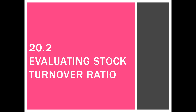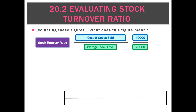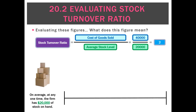Now that we can calculate stock turnover ratio, that's kind of useless if we don't know how to evaluate it and what it means. So looking at the stock turnover ratio as a number, in this example we calculated a ratio of 2.0. What does that actually mean?